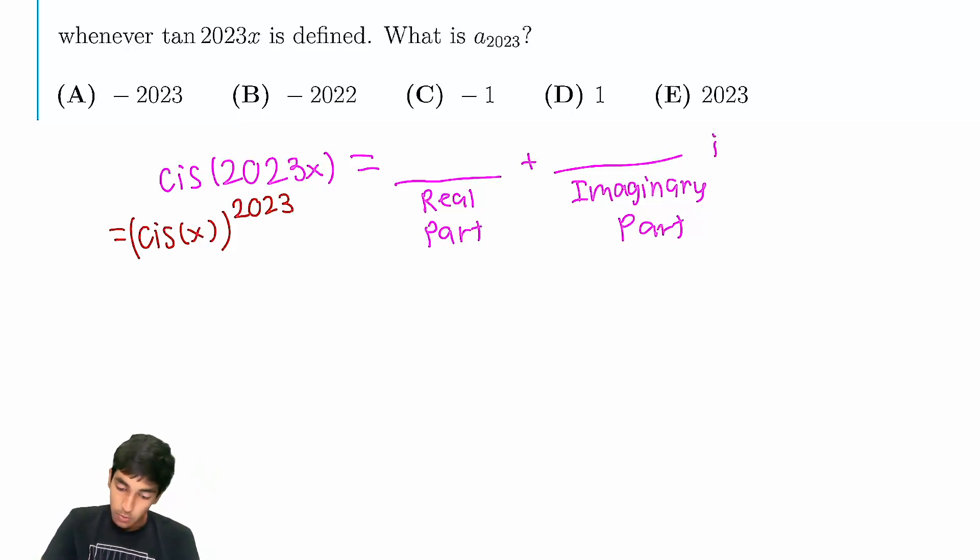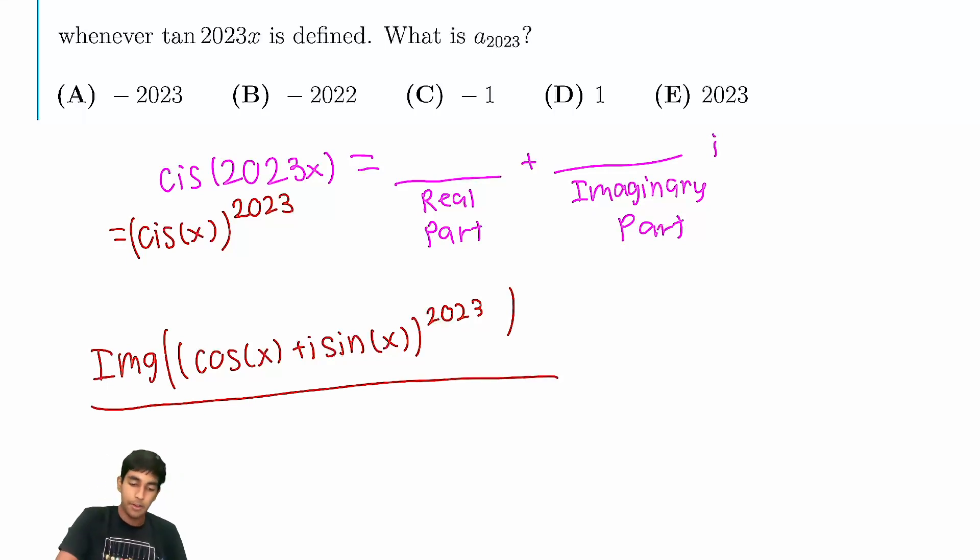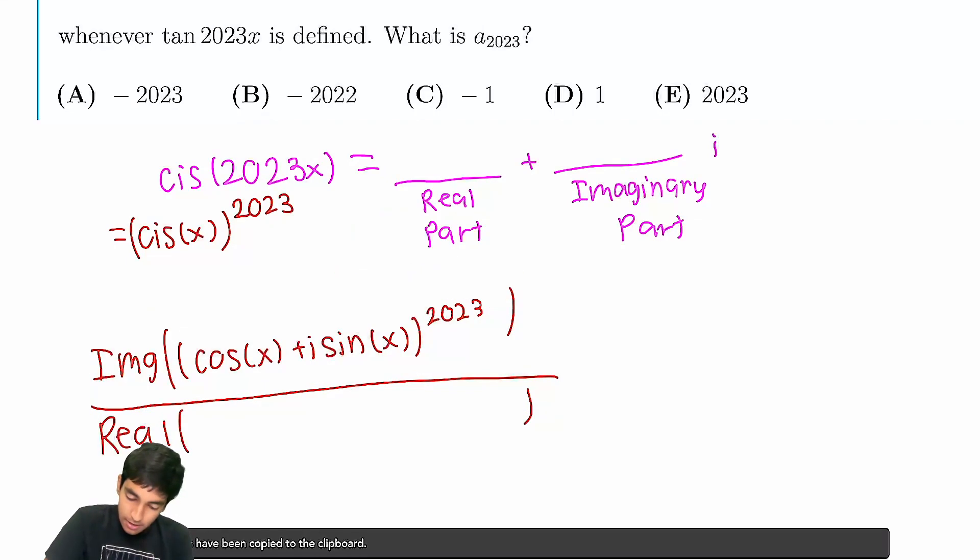So cis of x to the 2023 is going to equal to all of this part. And we're trying to find, okay, in cis of x to the 2023, and you know what, let's just write it in full form, cosine x plus i sine x, this is 2023. We're looking for the imaginary part, I think this is the notation that you use or something like that. And then you have real part, real part of that same thing. And I'm just going to use my copy-paste feature here.